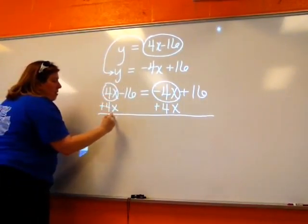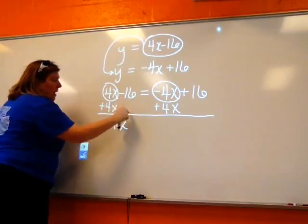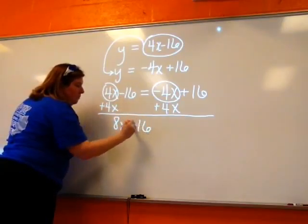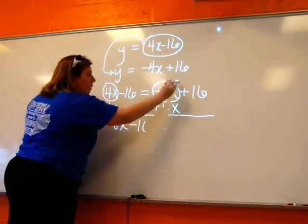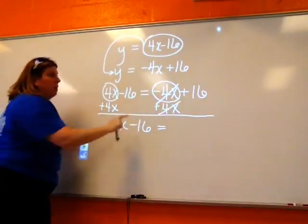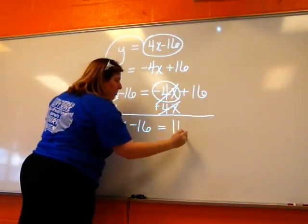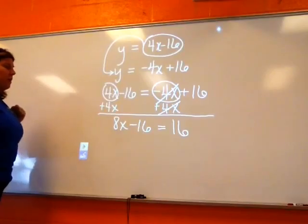4X plus 4X is 8X, so that's going to be 8X. I'm going to keep my minus 16 and I'm going to set that equal, those cancel out, to a positive 16. So there we go, positive 16.